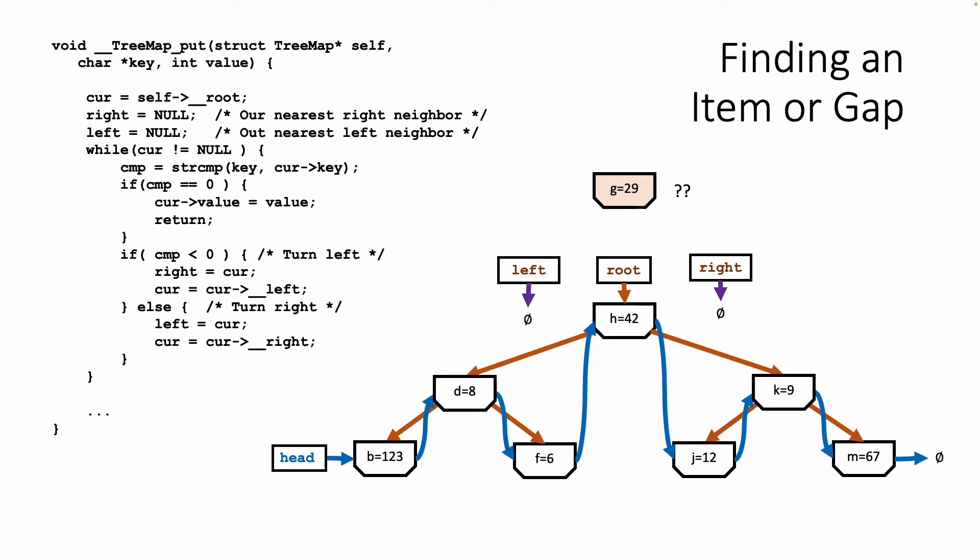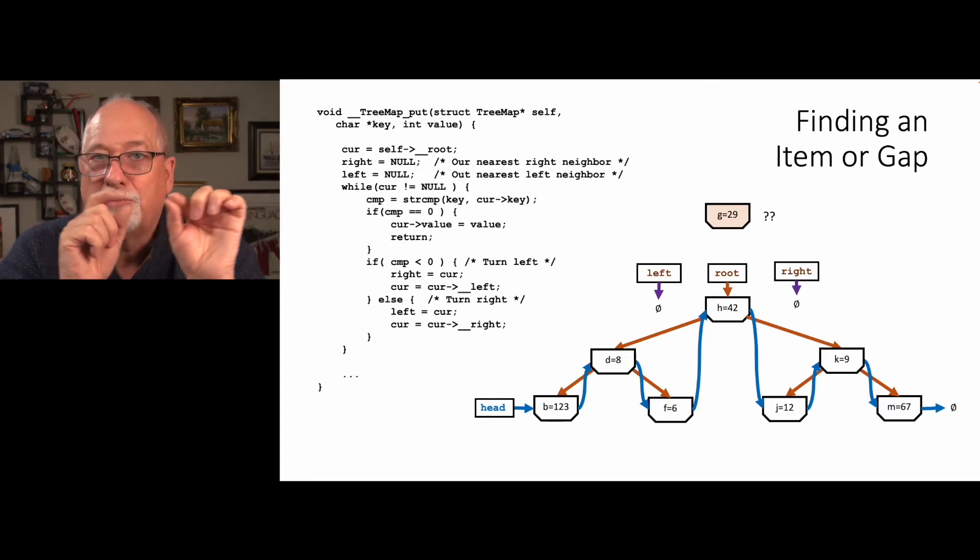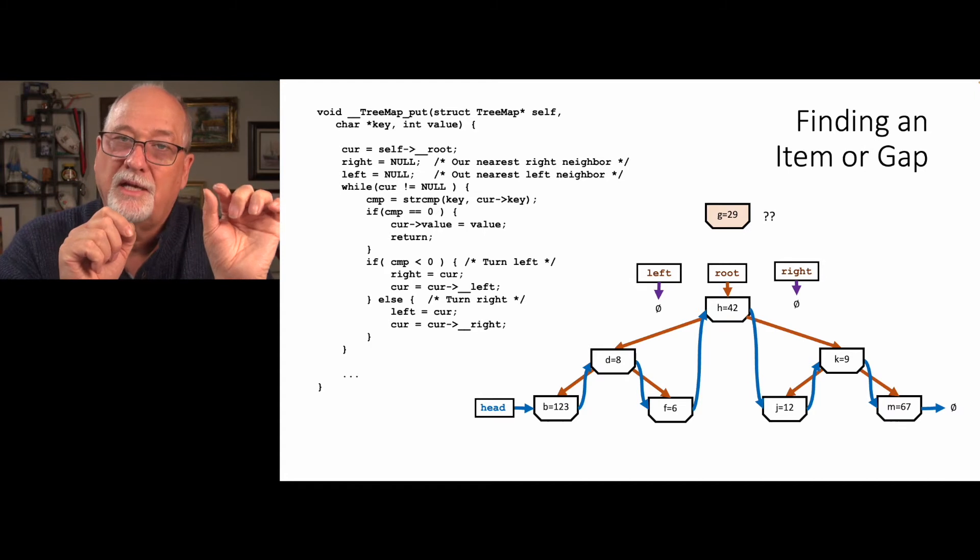The problem is we're going to have to link these things back up. When we are just doing a tree, it was easier because you would either find the item or find the place to link it. Trees are easier to maintain. The linked list is harder to maintain because you've got to keep track of the item that is the largest item less and the smallest item greater, and that's what I call the gap.